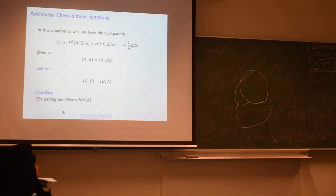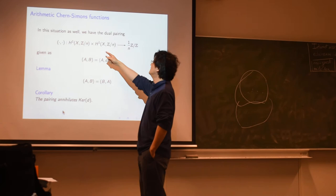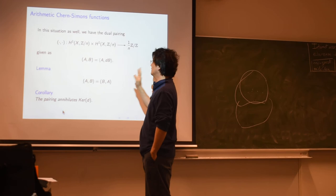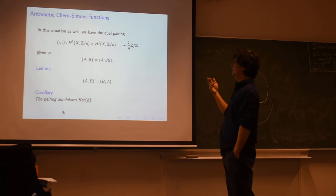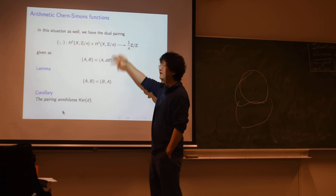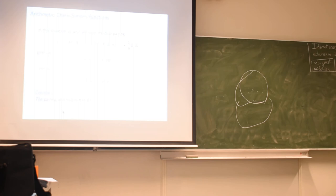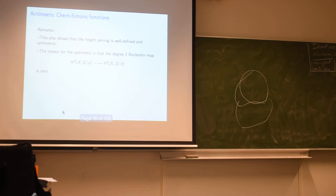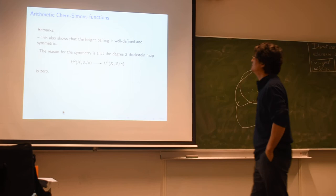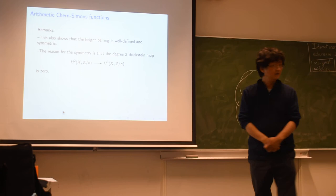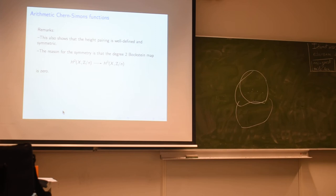This is, I think, a reasonably interesting arithmetic analogue of linking numbers that makes the formalism exactly parallel to what you do in differential geometry. Similarly, you can do this with the analogue of one-forms: take H1 and pair them as you did with one-forms, by pairing A with D of B. This pairing is also symmetric. And as a corollary of the symmetry, you can see that the pairing annihilates the kernel of the D operator, because you can just change the roles of A and B. The fact that the kernel of D kills the pairing also shows that the height pairing on ideals is well-defined and symmetric. The reason for the symmetry is that the degree-2 Bockstein map is zero, which can be verified easily from the structure of the cohomology.